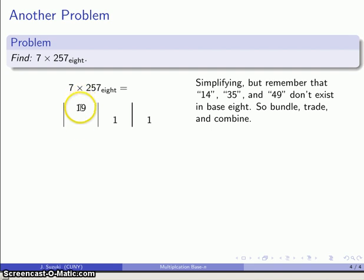And, again, I'll split this into a 16 and 3. That's 2 8s. So I'll trade, and there's nothing to combine it with. And so that allows me to write my final product, 2, 3, 1, 1, written in base 8.